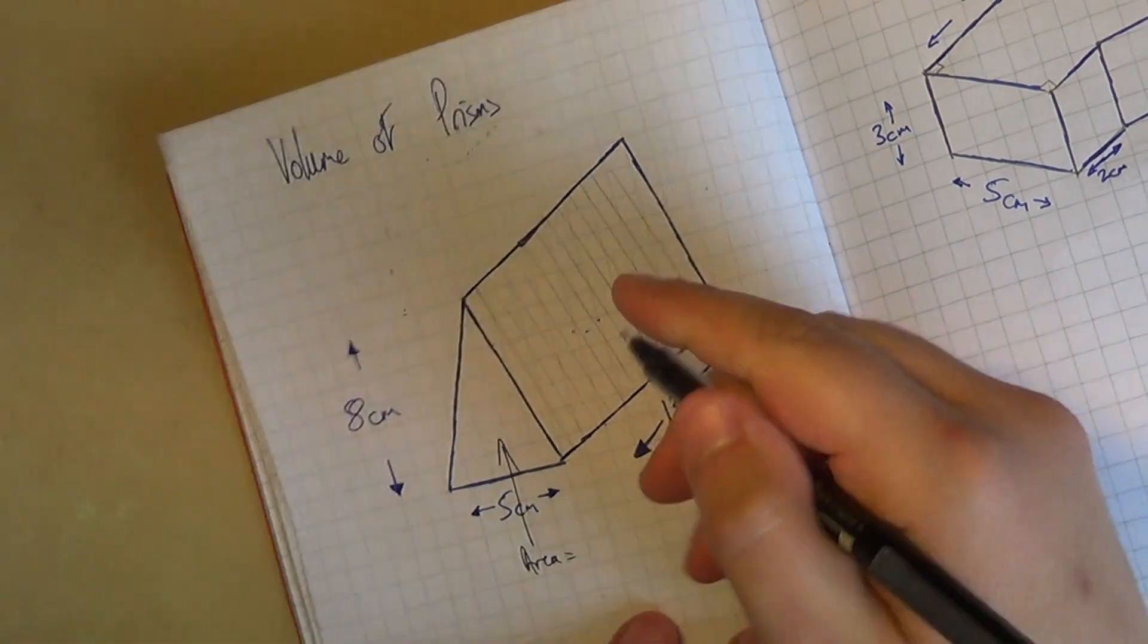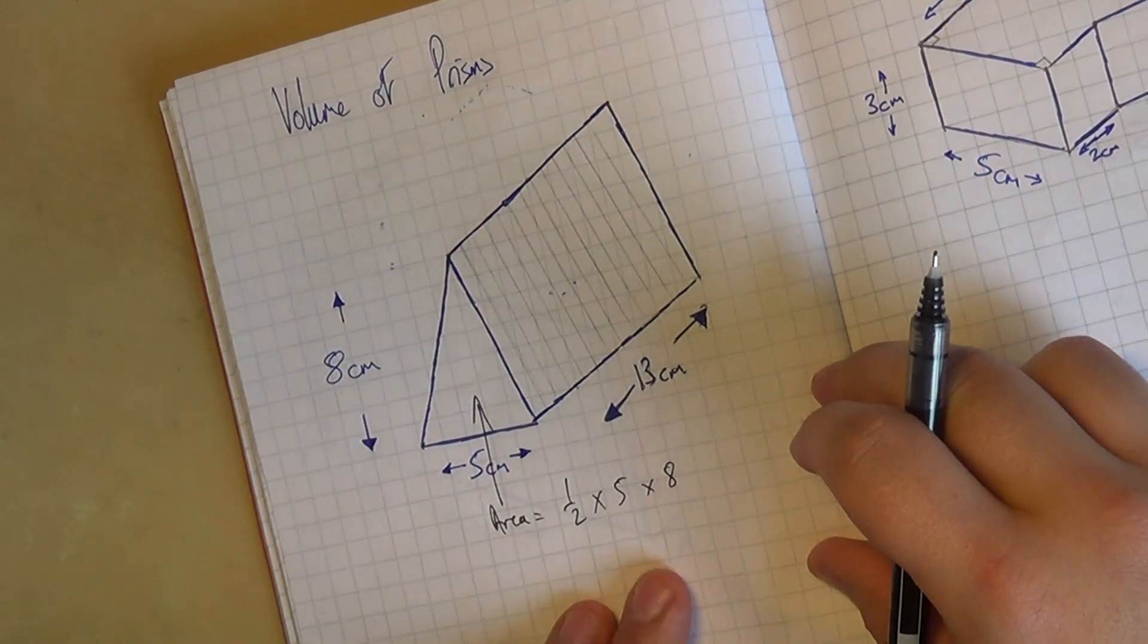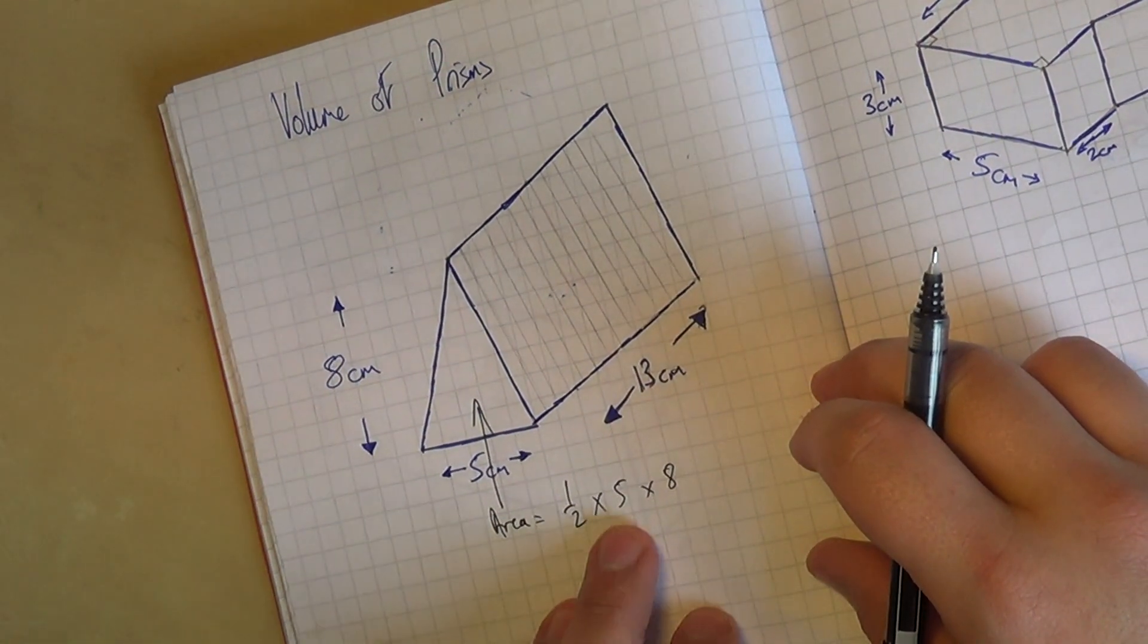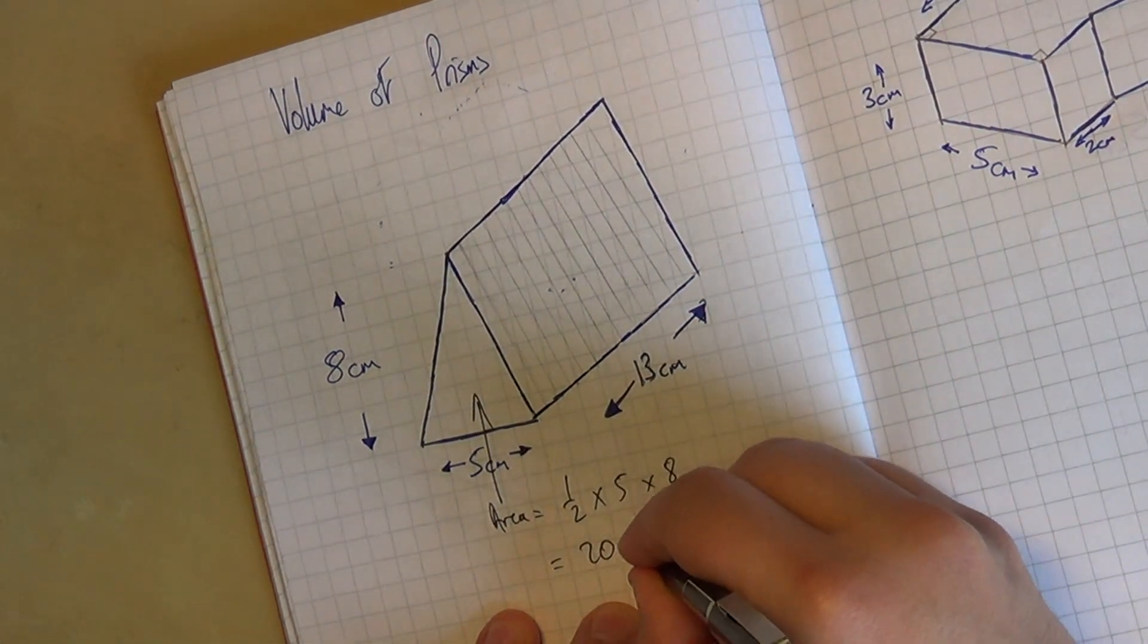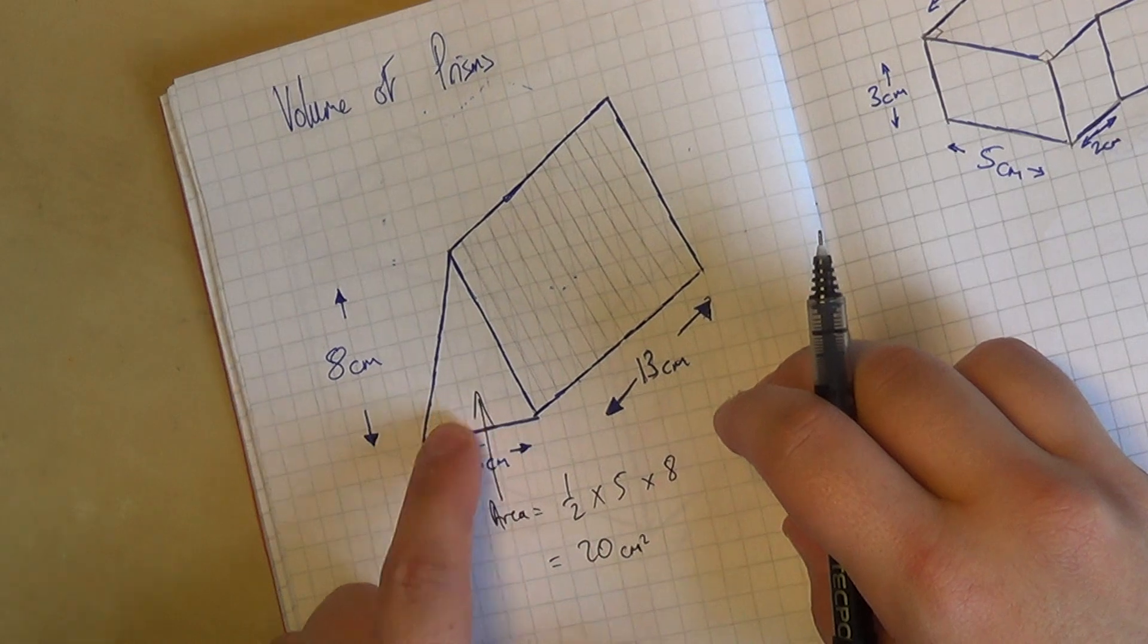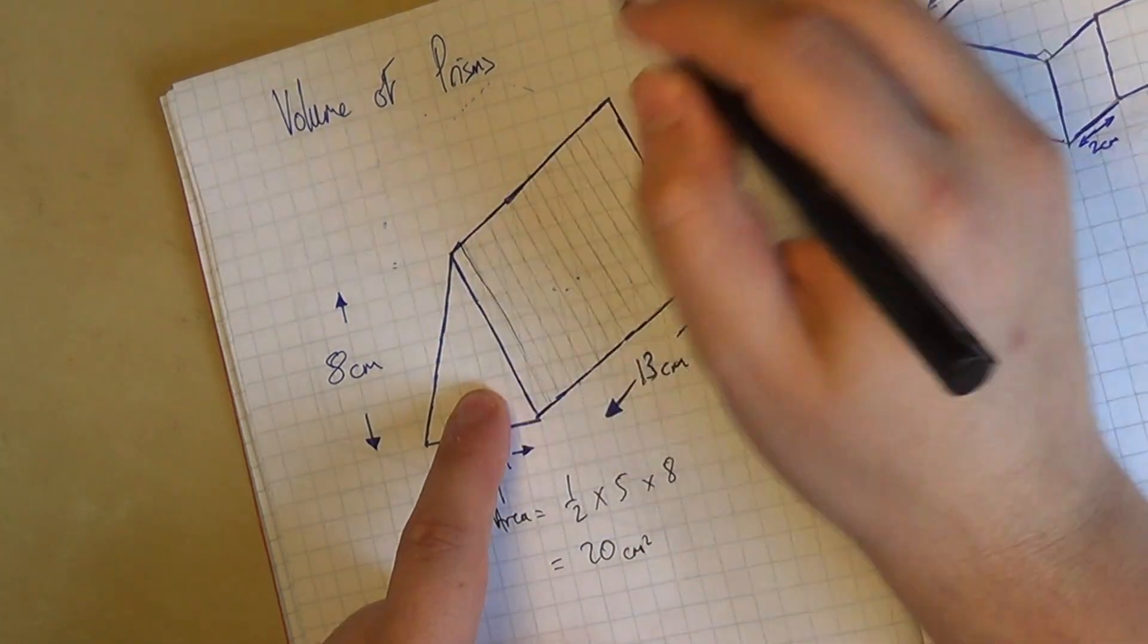So first of all let's find the area of this triangle. So the area of any triangle, you should know, is a half times the base times the height. And we've done that before, that's the thing you should know, and a half of 5 times 8 is 20. So the area on the end there is 20 centimetre squares. Which means this first slice is 20 centimetre cubes in volume.